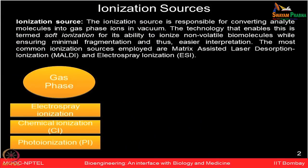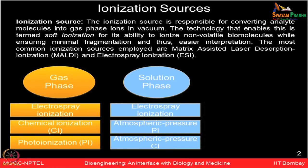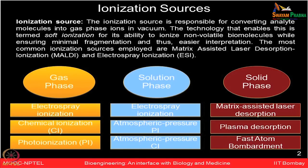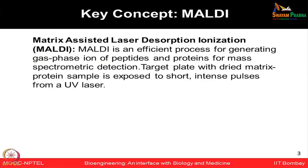The first component of the mass spectrometer is the ionization source. Soft ionization is known for its ability to ionize non-volatile biomolecules while ensuring minimal fragmentation, so one can easily interpret the data. The most commonly used ionization methods include electrospray ionization (ESI) and matrix-assisted laser desorption ionization (MALDI). MALDI is one of the efficient processes for generating gas-phase ions of peptides and proteins for mass spectrometry detection.